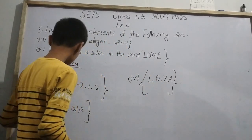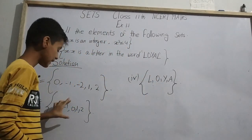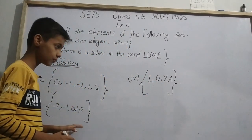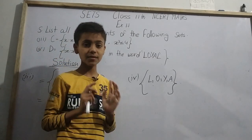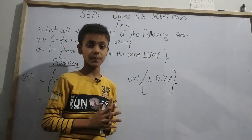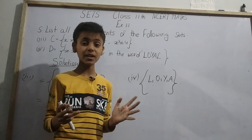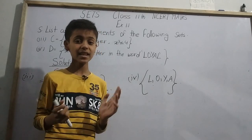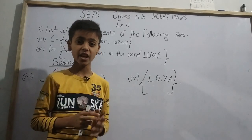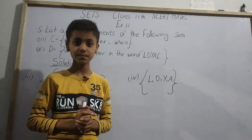So for Question 3 the answer is {-2, -1, 0, 1, 2}, and for Question 4 the answer is {L, O, Y, A}. This was my today's topic. If you like this video, please like it and subscribe to my channel. Thank you.